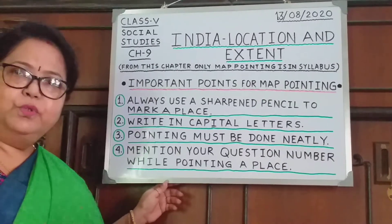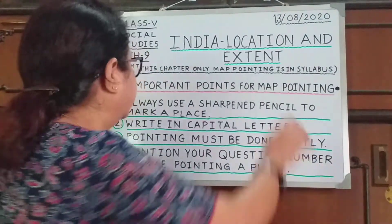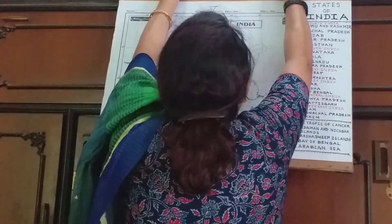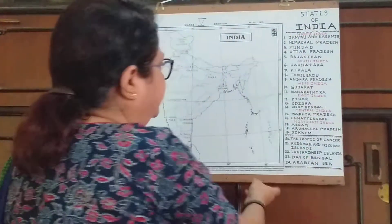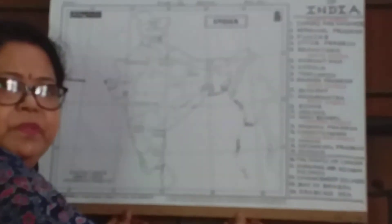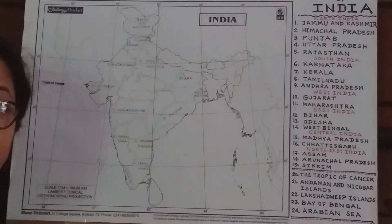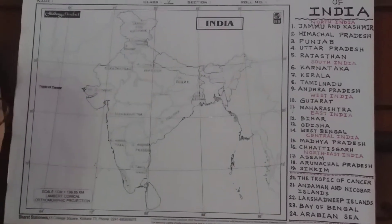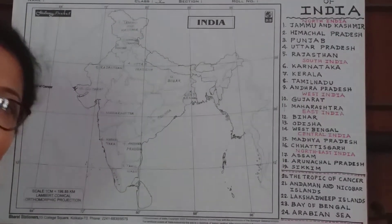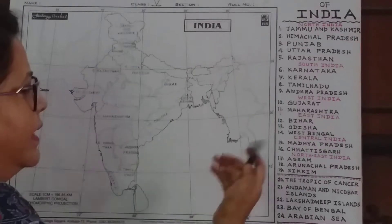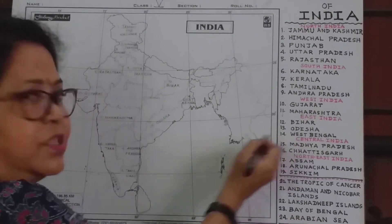Now I will go to the rest of the places which we have to mark on a political map of India. I am using pen for visibility only. What will you use? Pencil — that too sharpened. Up to number 14 I did in the last video.